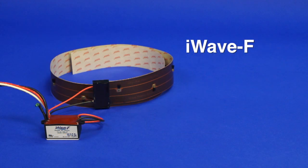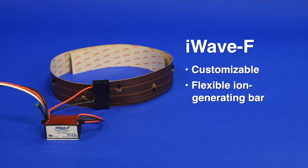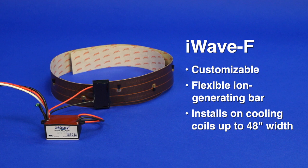We also offer the iWave F, a customizable flexible ion generating bar that installs on cooling coils up to 48 inches in width.